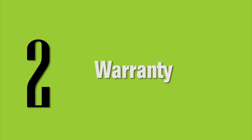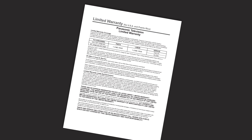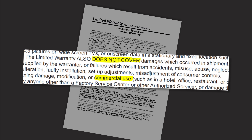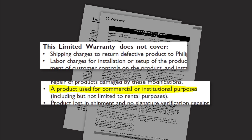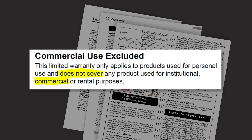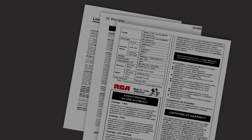Most department stores offer extended warranties on electronic products, and this is something you certainly want to look into if you're going to be using consumer screens for your digital signage. You want to make sure you look at the warranty language carefully — many manufacturers have language written in stating that if you use those screens for commercial use, it will severely limit or could even void the warranty. Commercial screens usually come with a two or three year warranty right out of the box, and it's easy to get those extended to up to five years.